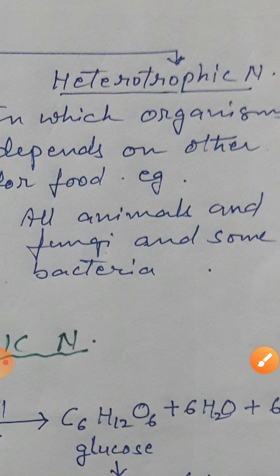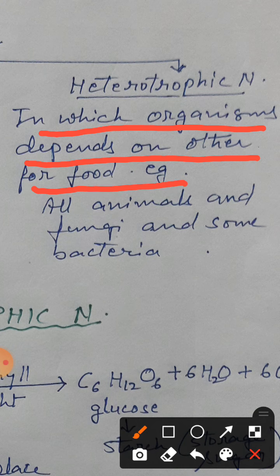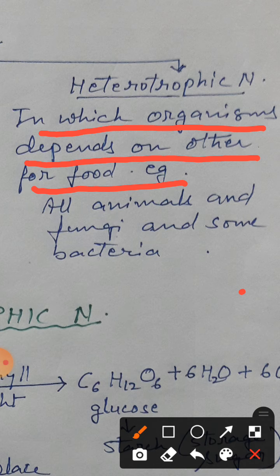Another one is heterotrophic nutrition. This is the nutrition in which organisms depend on others for food. Jo organisms hain, woh apna food khud nahi bana sakte, isliye woh doosre organisms par depend karte hain apne food ke liye. All animals, all fungi and some bacteria come under heterotrophic nutrition. It can be herbivores, carnivores, omnivores — ye aapne lower classes mein bhi padha hai.